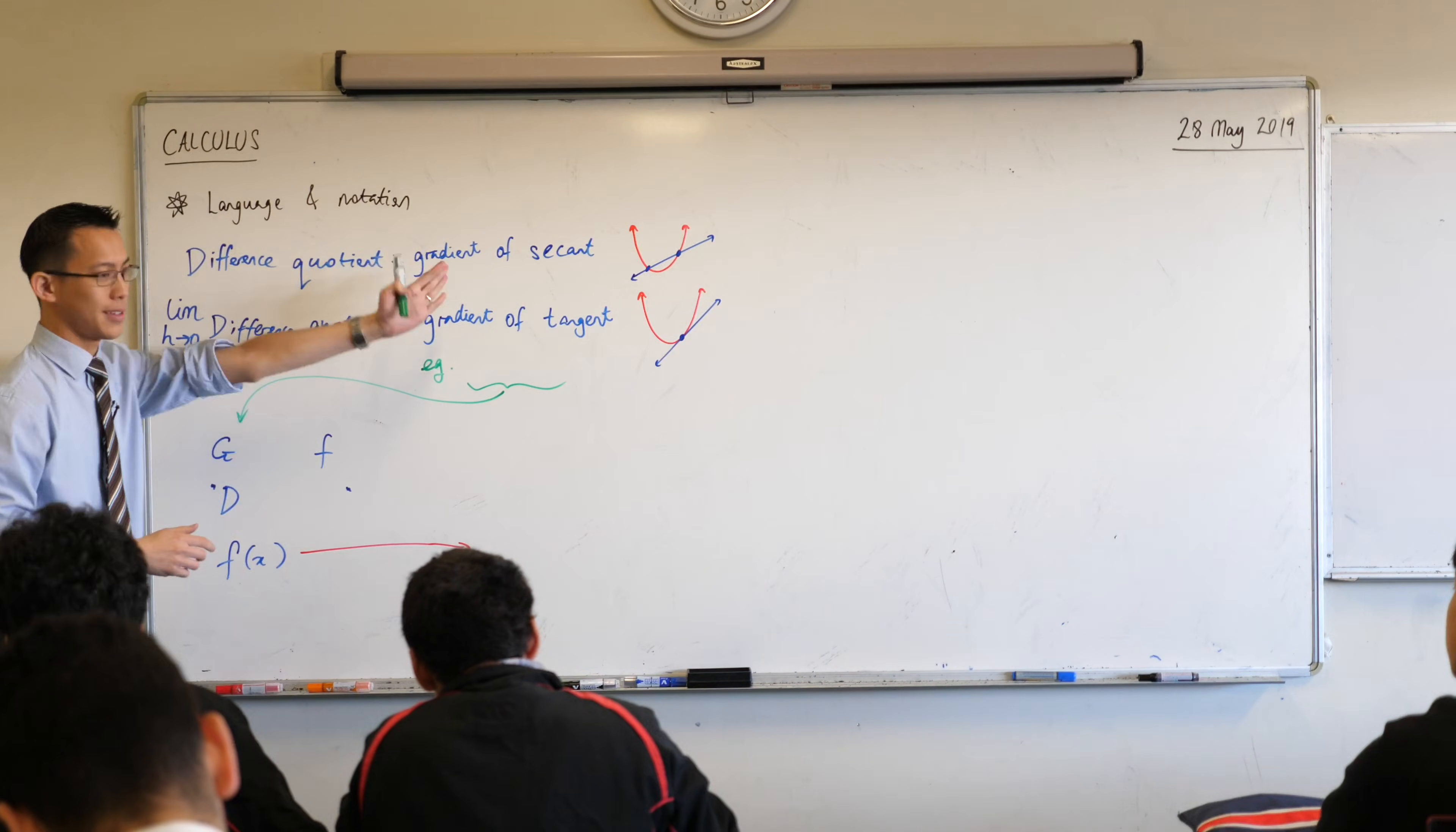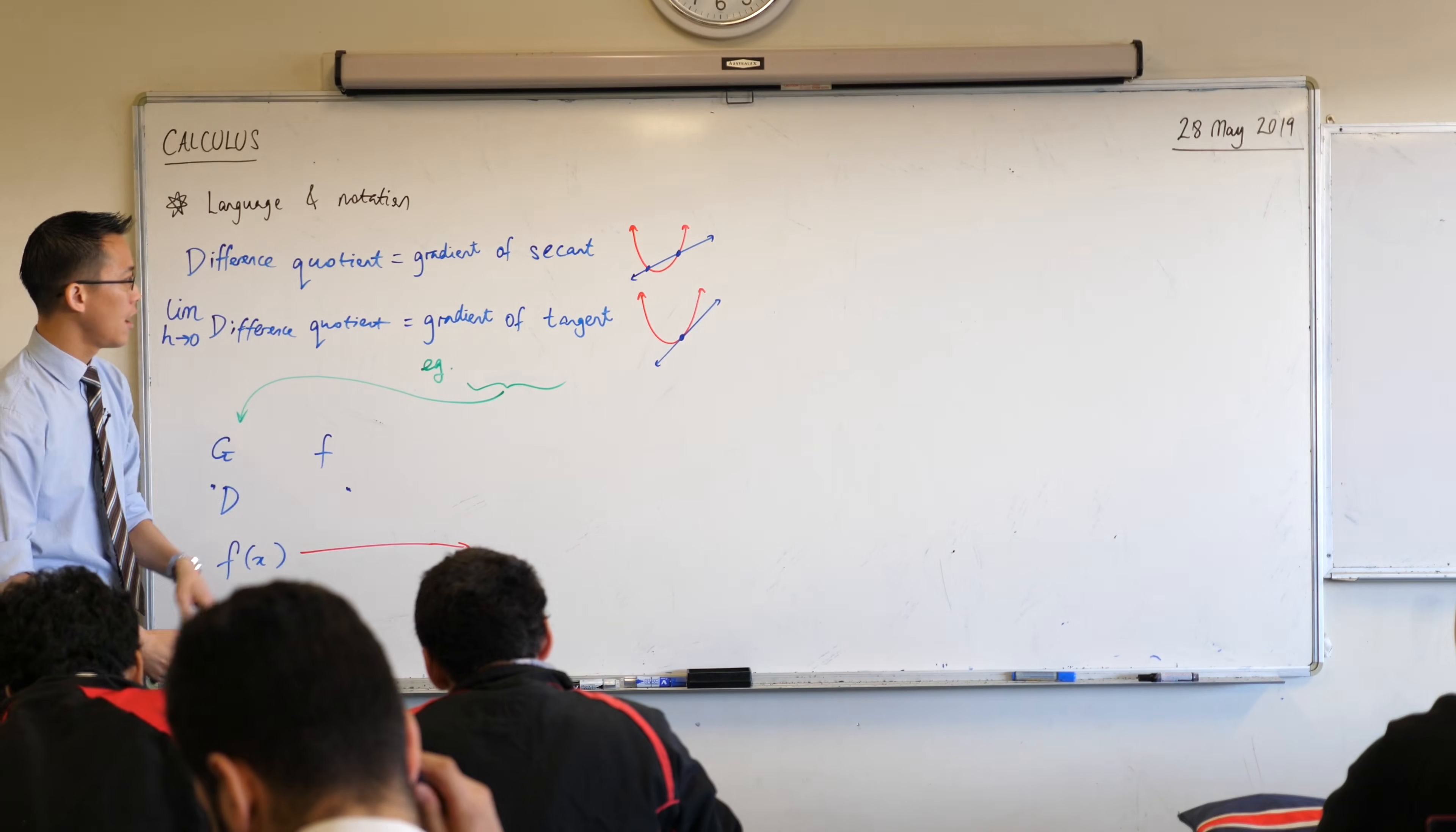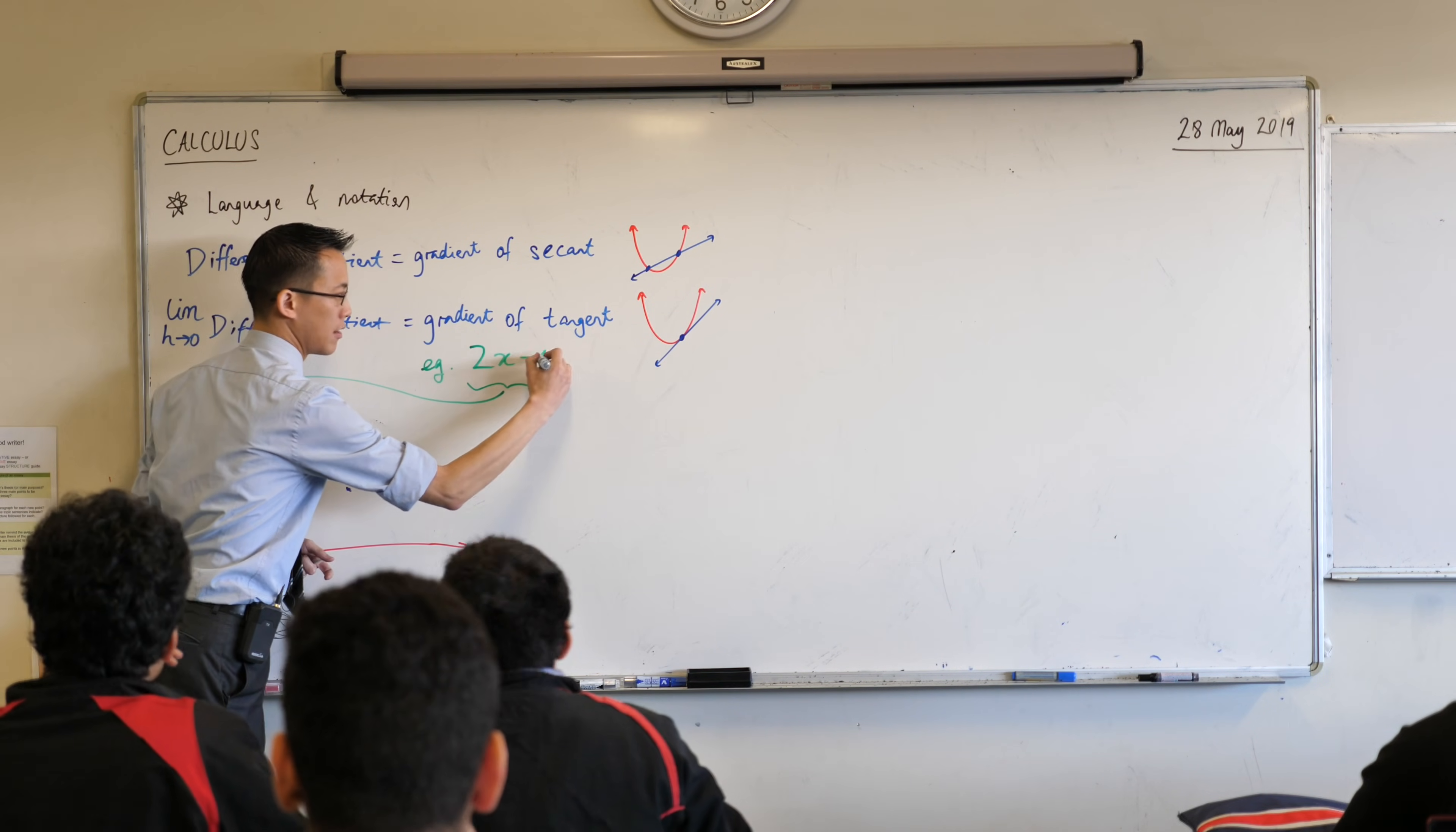when we did our gradients of secants, you just got numbers like negative five and negative one or three or something like that, but then when we worked out the gradient of the tangent, it had x's in it. Do you remember that?